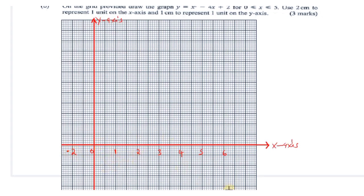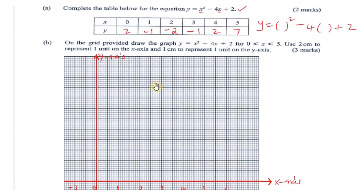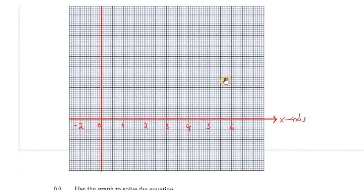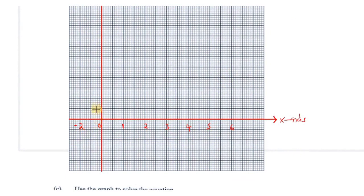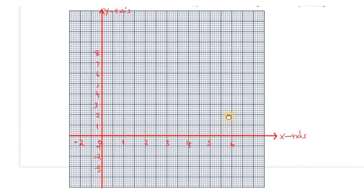On the y-axis, 1 centimeter represents 1 unit. From 0 we mark 1, 2, 3, accommodating the maximum value of 7, then going negative: -1, -2, -3. We can stop there since the minimum value was -2. All values are now accommodated as required, so we move on to plotting.